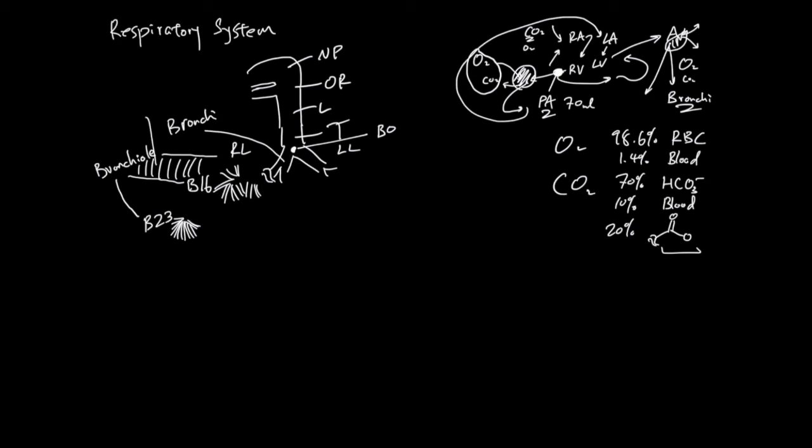All these is called dead space because there's no air exchanging structure there. And the size of this is about 150 milliliters. But all of these is called the respiratory space. This is because after branch 16, you start seeing structure for gas exchange. And these are alveoli.